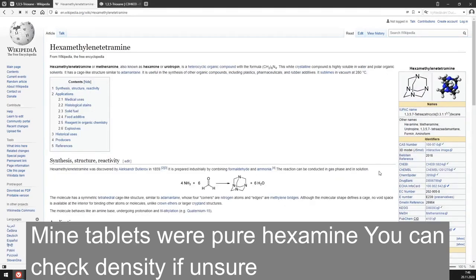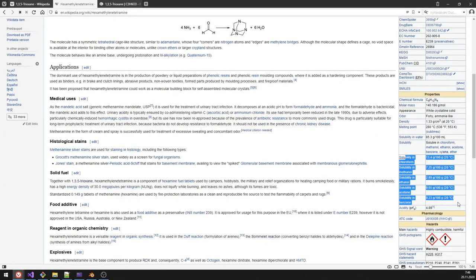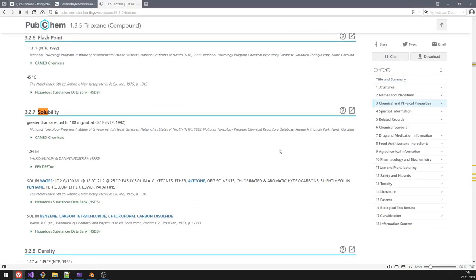But fortunately if you look at the hexamine data, you can see that it has quite low solubility in available solvents. In fact, acetone is the lowest one. And here on this page you can see that the trioxane is readily soluble in acetone, whatever that means.